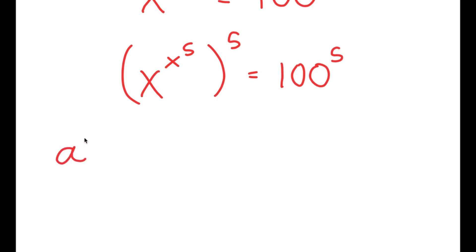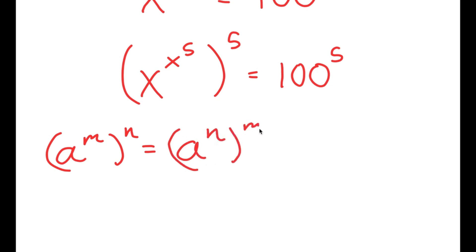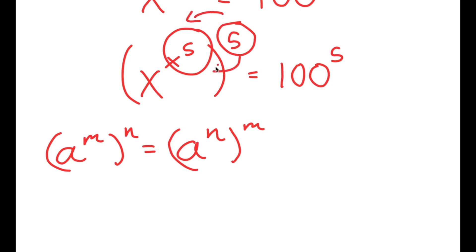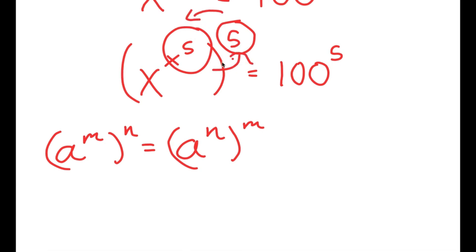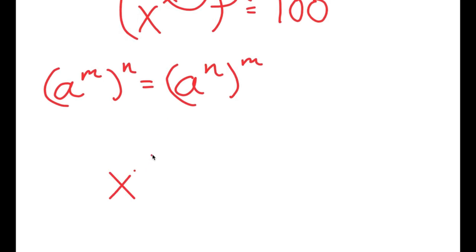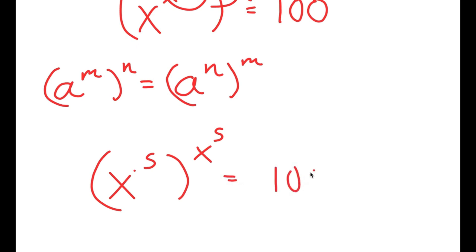I can use the property a to the power of m to the power of n is equal to a to the power of n to the power of m on x to the power of x to the power of 5, to the power of 5. We can think of x to the power of 5 as m and 5 as n, so I can switch the places of these two. So now I get x to the power of 5 to the power of x to the power of 5 is equal to 100 to the power of 5.